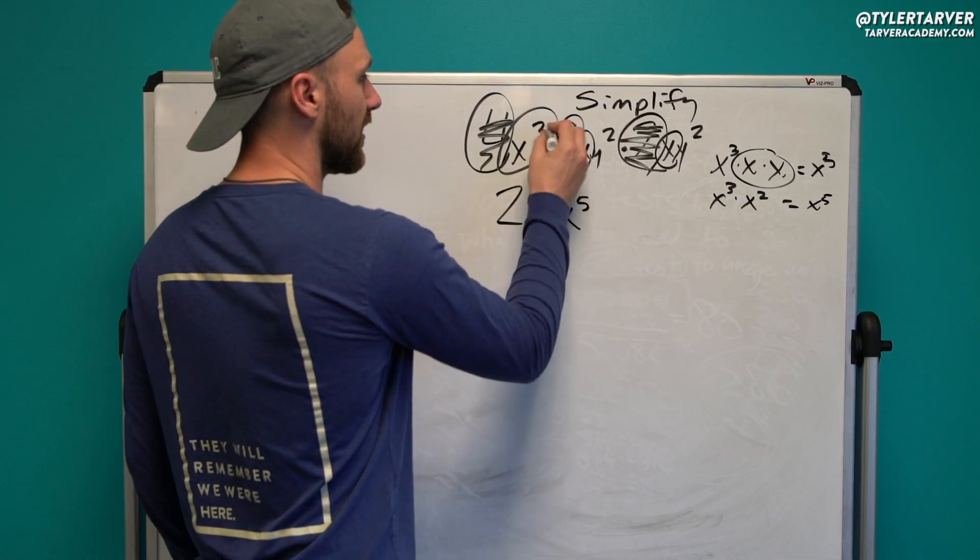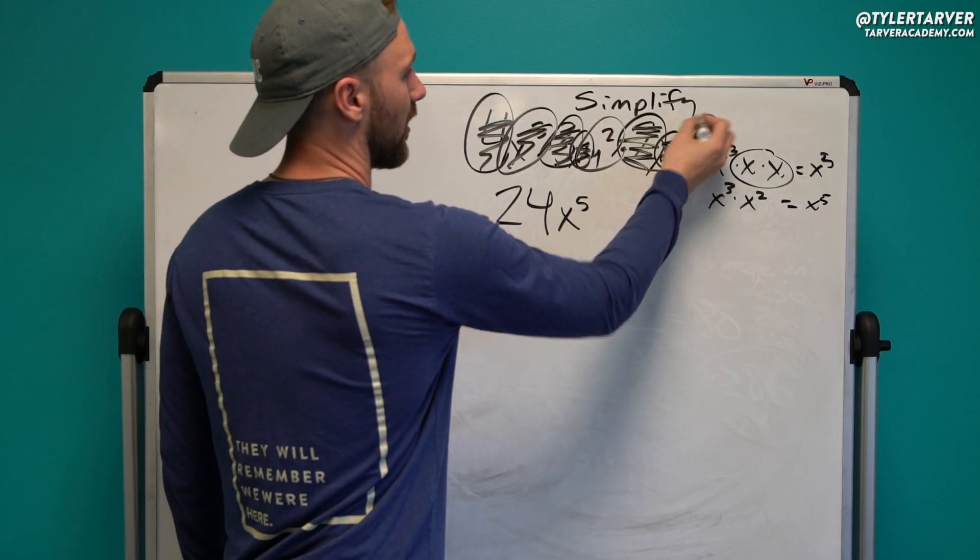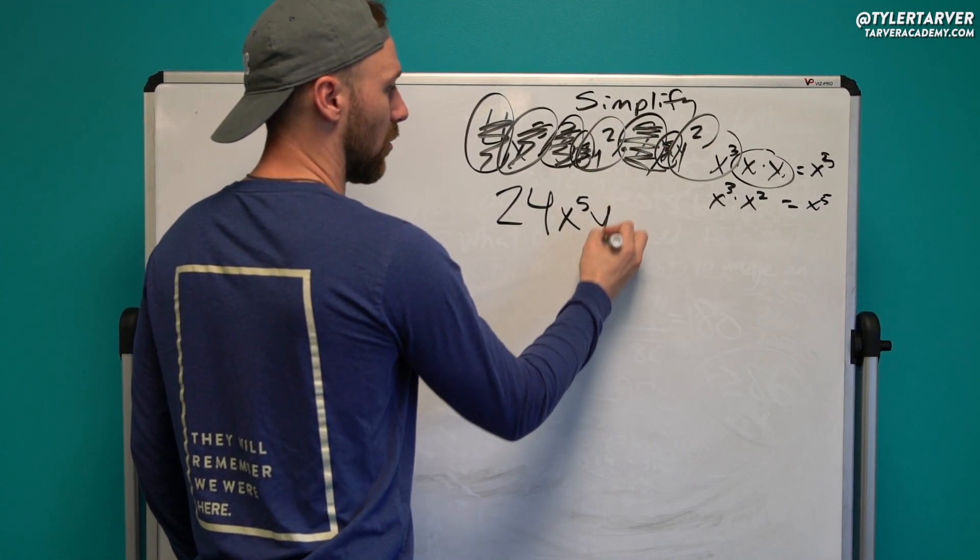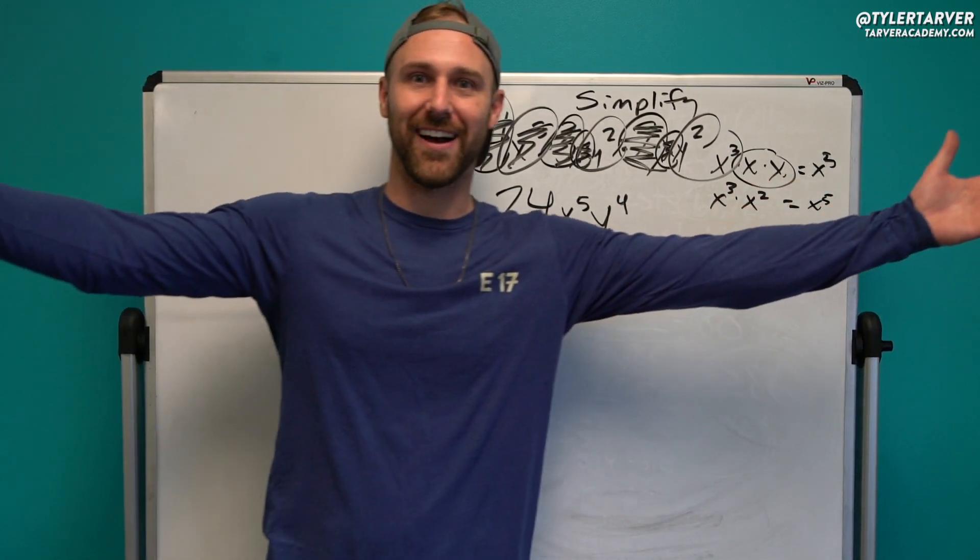So I know my x's are x to the fifth. I'm gonna mark them out. And then I've only got y squared times y squared. Add my exponents, it's gonna be y to the fourth. And that's it, we simplified it.